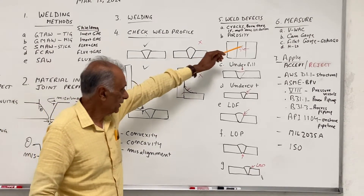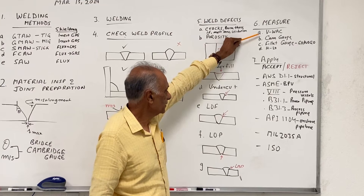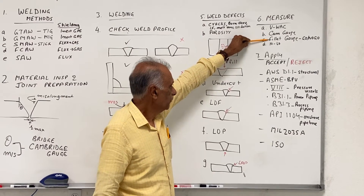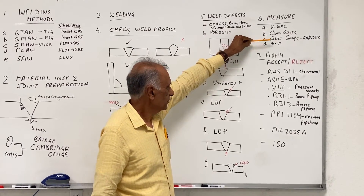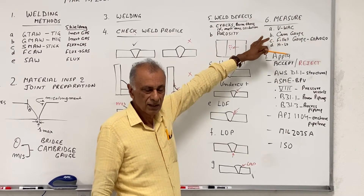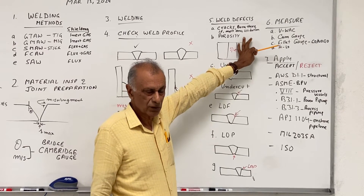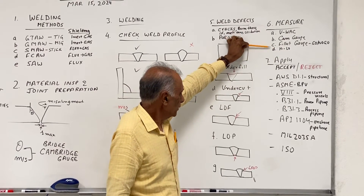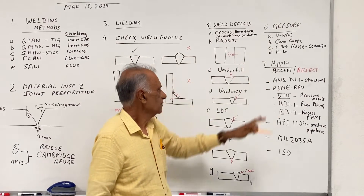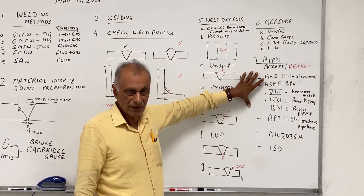For those measurements, we need some measurement tools. These are the common gauges used to measure discontinuities: the VWAC gauge, the bridge cam gauge, the fillet gauge (which is the go-no-go gauge), and the high-low gauge. These are the most common ones, and obviously a ruler as well. You take the measurement and then apply the acceptance criteria given in the code.